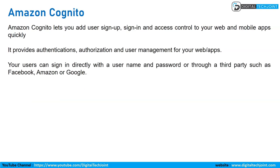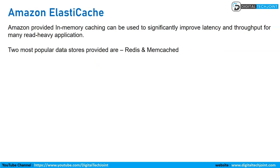Amazon Cognito lets you add user sign-up, sign-in, and access control to your web and mobile apps quickly. You can also use Facebook, Amazon, and Google authentication using the Amazon Cognito service.